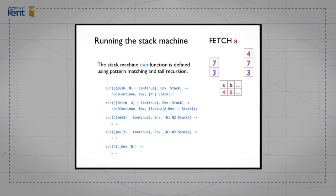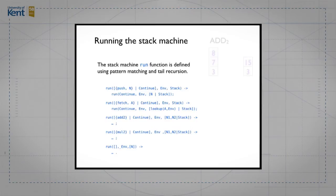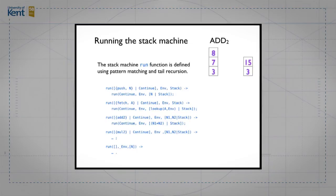For the add and multiply instructions, we use more sophisticated pattern matching. For add, we match the program to confirm an add instruction at the head, match the environment by a variable, but require at least two values on the stack. We then pop those two values and replace them with their sum. This only matches when there are at least two values on the stack — it will fail if called with one or zero values, and that's fine since we program for the correct case. Multiplication is exactly the same, except we combine the top two values by their product.